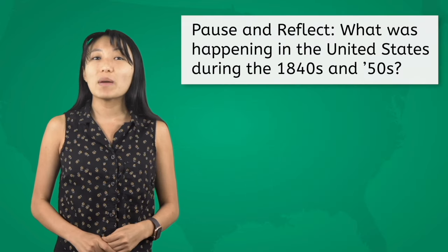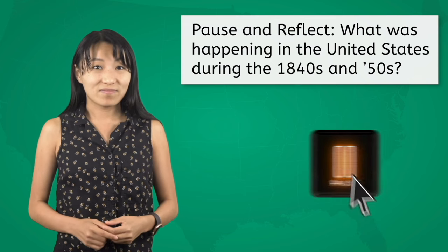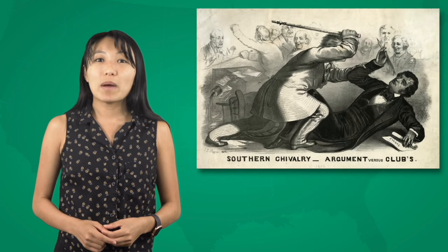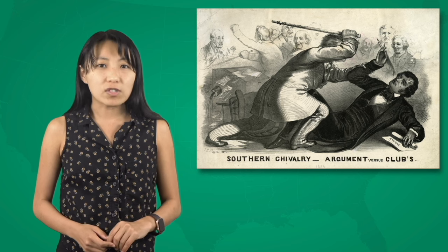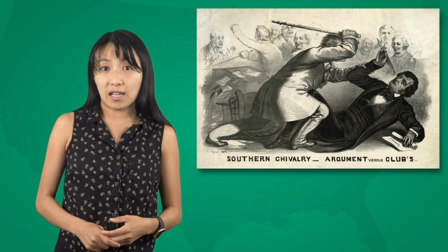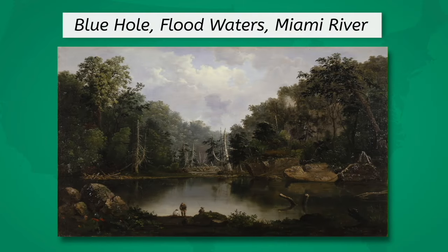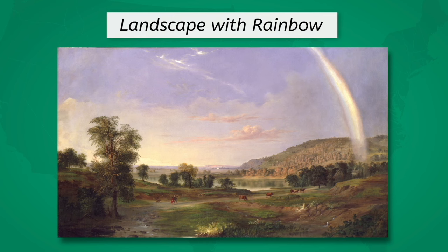Pause and reflect on what you remember was happening in the United States during the 1840s and 50s. At this point, the U.S. was slowly building up to the Civil War, with fierce debates taking place about the institution of slavery and what place it did or didn't have in a growing nation. Despite the challenges of being a black artist in a predominantly white society, Duncanson rose to prominence by the 1840s and 50s by painting landscapes like Blue Hole, Flood Waters, Miami River and Landscape with Rainbow, which showcased peaceful and harmonious depictions of America's natural landscapes.